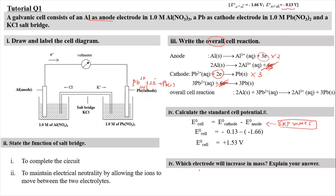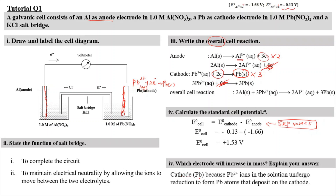For Question 4, which electrode will increase in mass? At the cathode, Pb²⁺(aq) from the electrolyte is reduced to form Pb(s), so there is a build-up of plumbum solid at the electrode. Therefore, the cathode — plumbum — is the one that increases in mass. The aluminium anode gets thinner as it dissolves into ions, while the cathode gets thicker as plumbum deposits onto it.